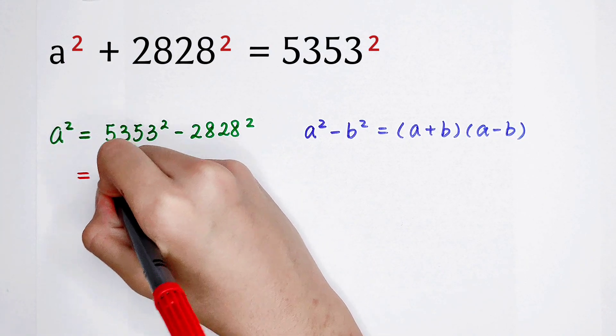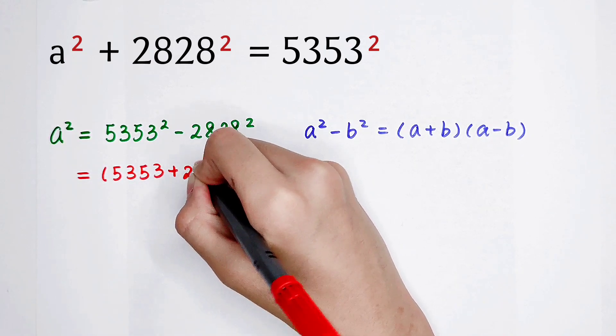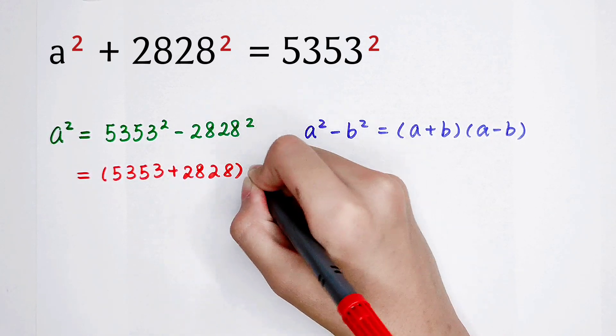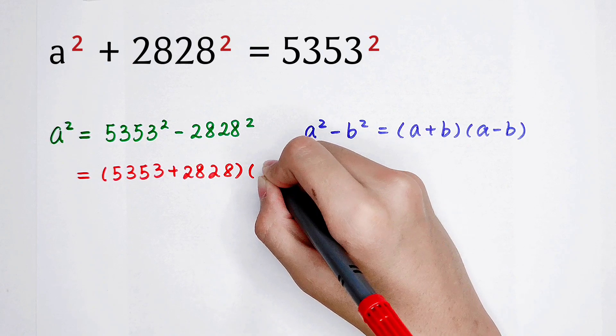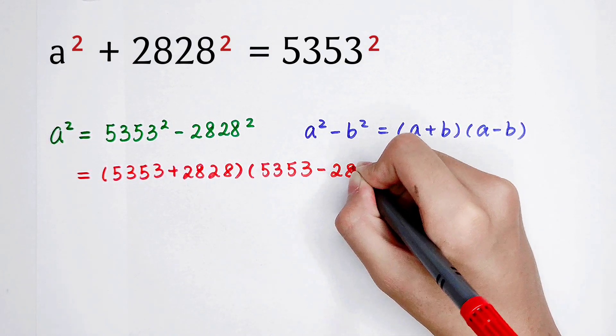So it's 5353 plus 2828 and then multiply by 5353 minus 2828.